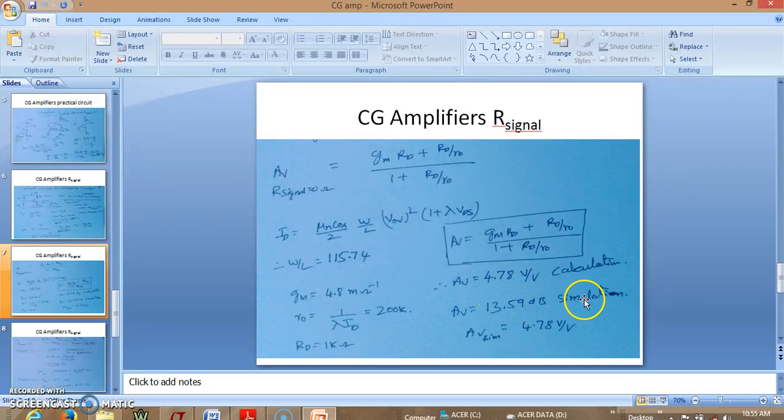So this is in dbs. If you actually find out what is the gain here, this is 13.59 dbs in simulation. We can actually find what is the voltage per volt from this 13.59 which can be calculated using 10 power 13.59 divided by 20. So by doing that calculation you will get the voltage gain in simulation is also found out to be 4.78 which was exactly the theoretical value also.